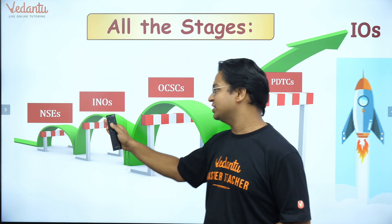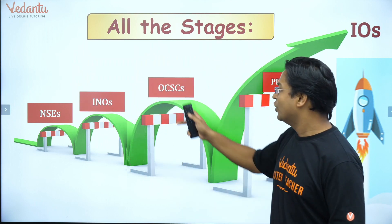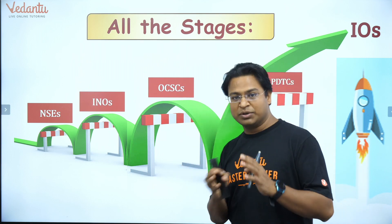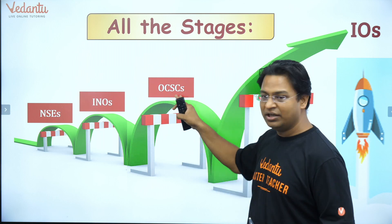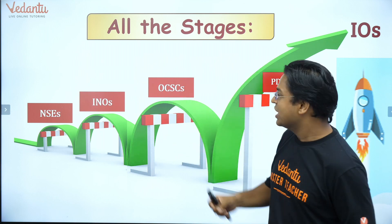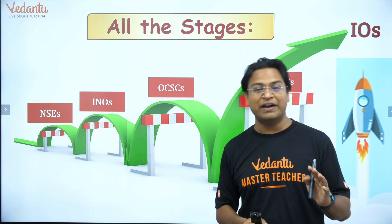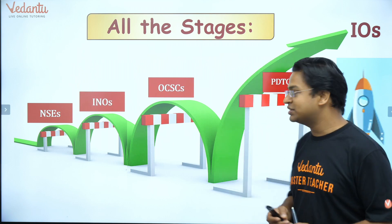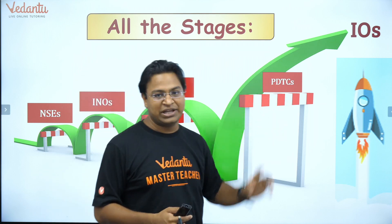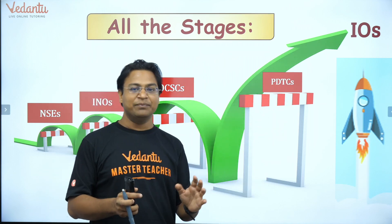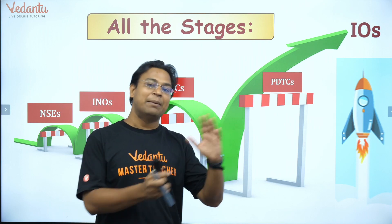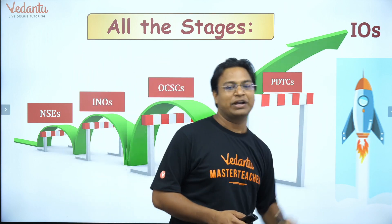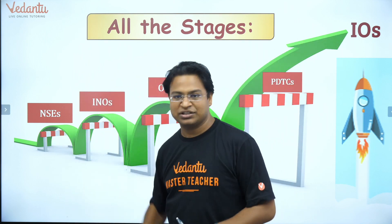The Indian National Olympiad is a written exam. Once you clear this stage, around 30 students are selected for the Orientation-cum-Selection Camp. Those 30 students are called in offline mode, trained, made to do experiments, and taught theories. Out of those 30 students, about 5 to 6 students are selected to represent India in the International Olympiad, and those students undergo a pre-departure training camp before competing internationally.